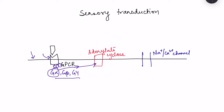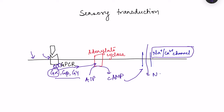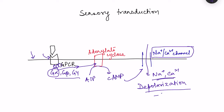Once adenylate cyclase is activated, it converts ATP to the second messenger cAMP. This cAMP causes the opening of a channel permeable to both sodium and calcium, leading to entry of sodium and calcium into the cell and causing depolarization. When this depolarization reaches the threshold of minus 30 millivolts, a large number of action potentials are generated.